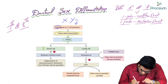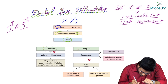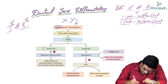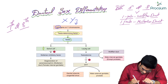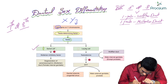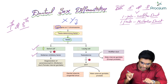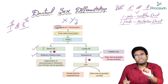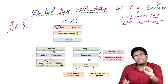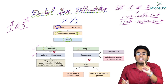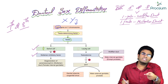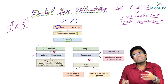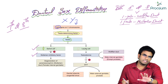The Sertoli cell will produce a hormone known as Mullerian Inhibiting Factor, or Anti-Mullerian Hormone. Important MCQ point: Mullerian Inhibiting Factor is produced by Sertoli cells, which are present inside the testis.